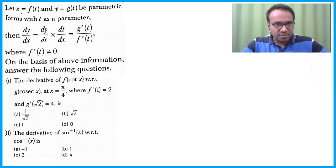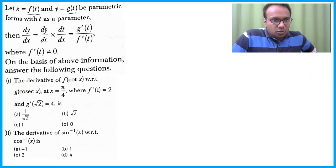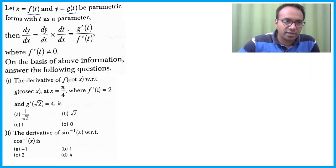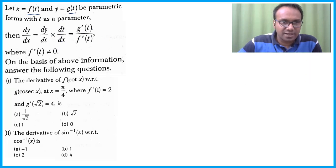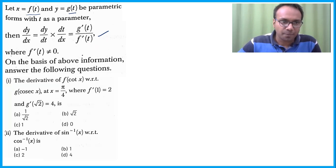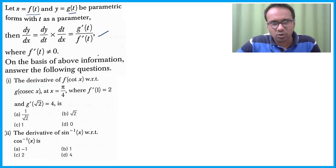New case study: x = f(t) and y = g(t) where t is the parameter. So dy/dx = (dy/dt) / (dx/dt) = g'(t) / f'(t), provided f'(t) ≠ 0. If f'(t) = 0, the differentiation does not exist. This is the standard parametric differentiation formula.